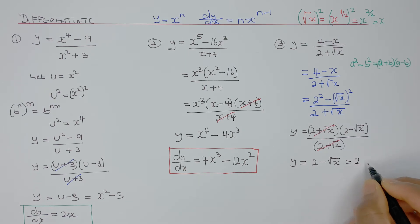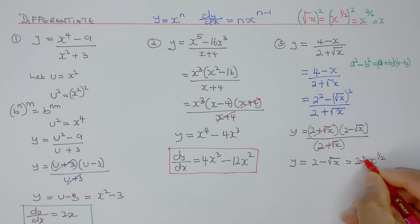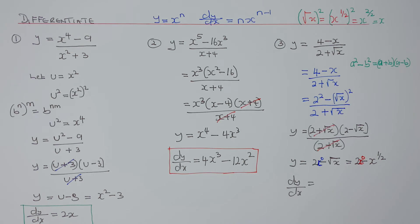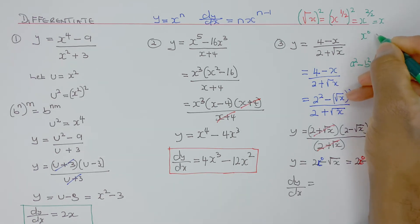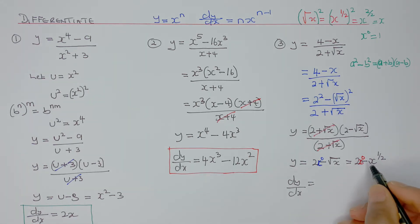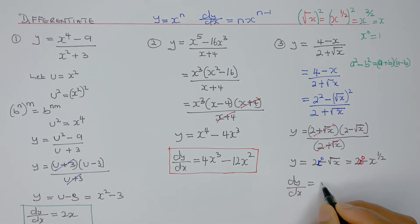So y equals 2 minus x to the power of a half. If you differentiate a constant — remember a constant has x to the power of 0 — so 0 times 2 will be 0, and that automatically disappears. And x to the power of 0 equals 1, so 2 times 1 is 2. So when differentiating, the constant term gives 0 and disappears.